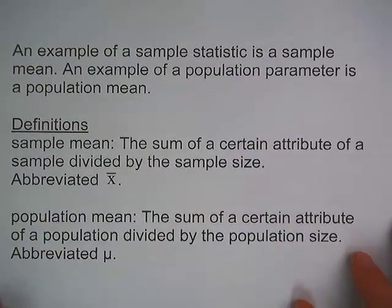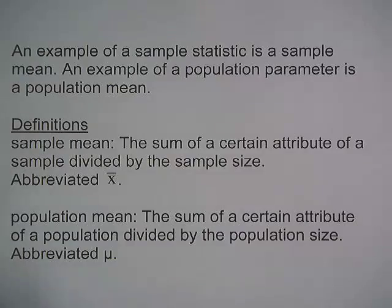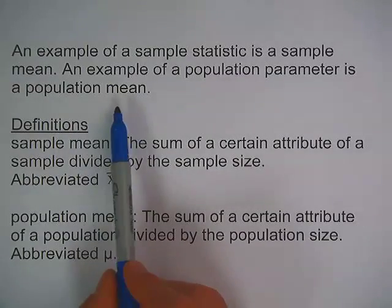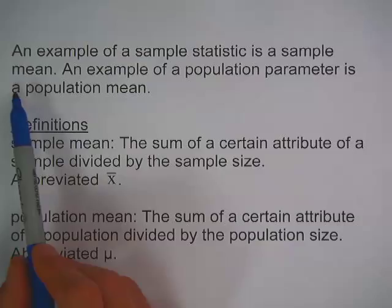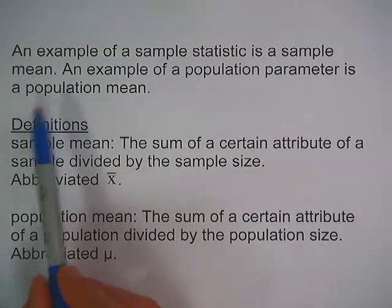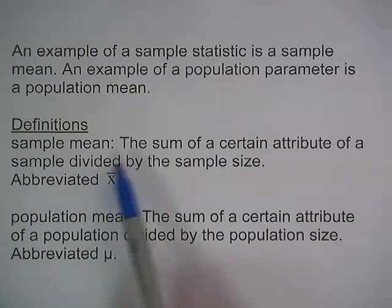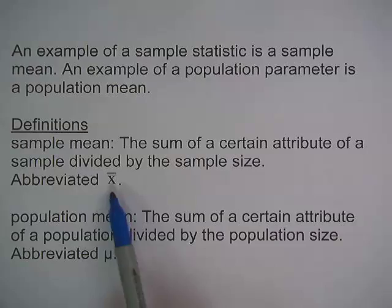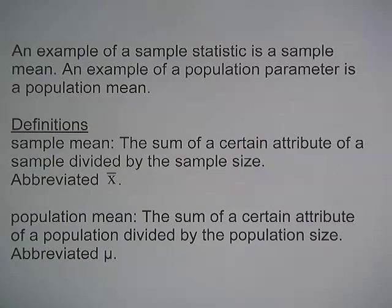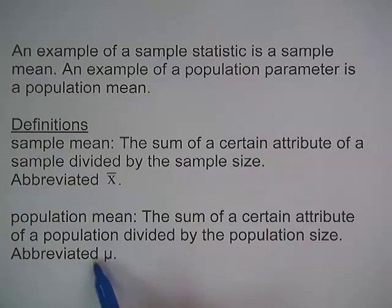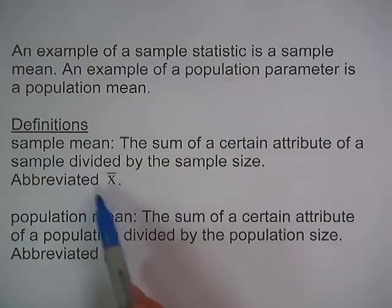An example of a sample statistic is a sample mean, and an example of a population parameter is a population mean. We would use a sample mean to make an estimate of a population mean. A sample mean is the sum of a certain attribute of a sample divided by the sample size, abbreviated x-bar. A population mean is the sum of a certain attribute of a population divided by the population size, abbreviated mu. So many times to estimate mu, because we're not going to be able to calculate mu directly, we're going to use x-bar.